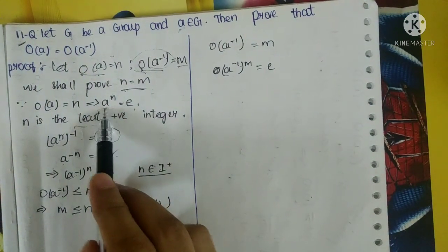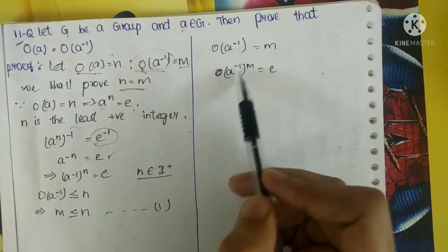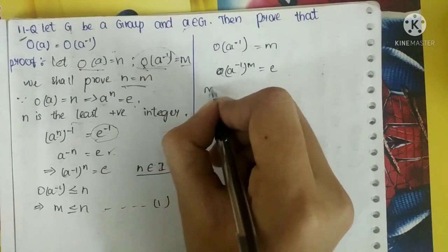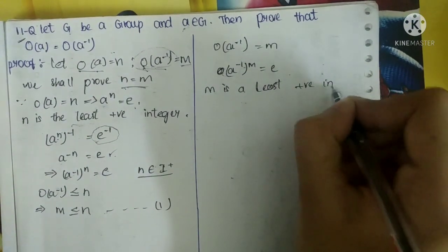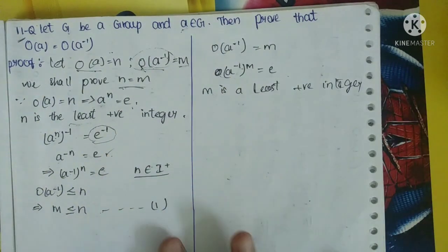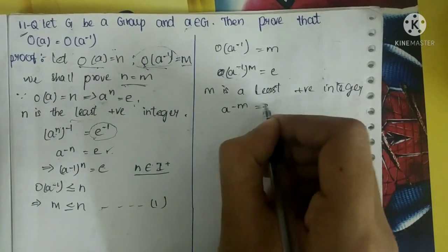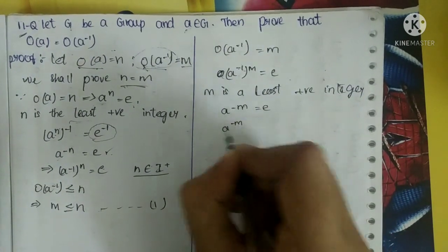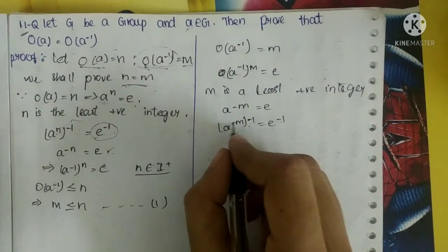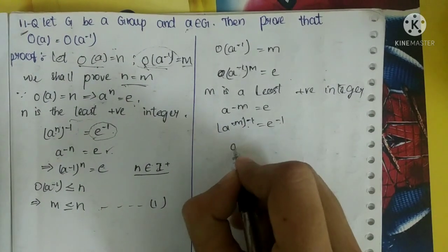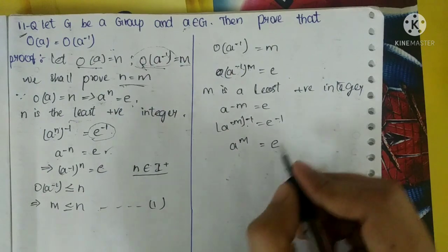O(A⁻¹) = M, which means (A⁻¹)^M = E. Similarly, like we did before, here we also have A⁻¹ instead of A, and we take M. M is also a least positive integer. Now we multiply both sides by (-1): (A⁻¹)^M multiplied by (-1) — applying minus 1 — gives A^M = E, because E inverse is E by inverse identity.